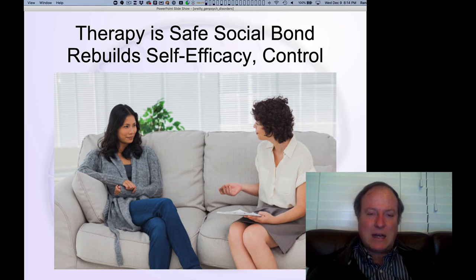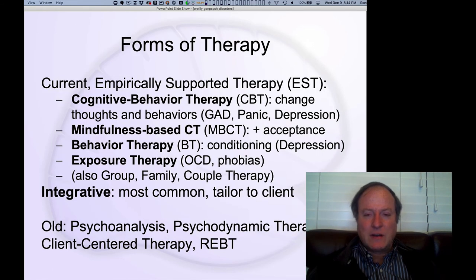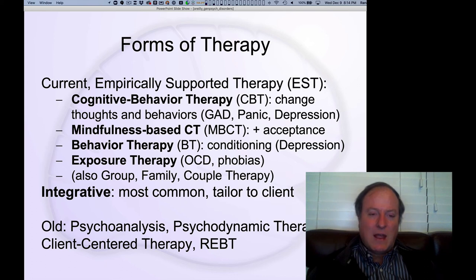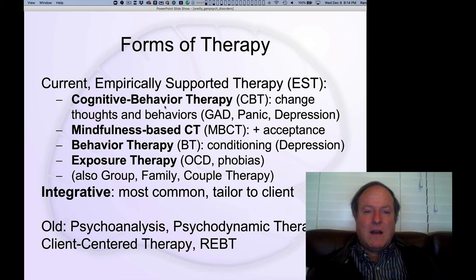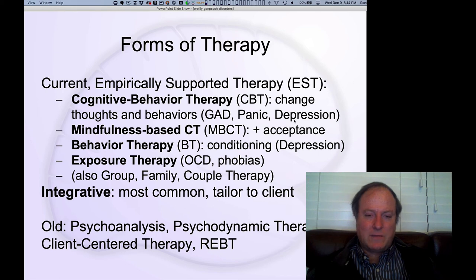Therapeutic allegiance and therapeutic alliances are terms used to describe the unique aspect of this relationship. There are several specific forms of therapy, and there's the notion of empirically supported therapy — therapy that through randomized controlled studies has demonstrated time and again that it is effective. Cognitive behavioral therapy is really the most widely adopted therapy; it involves ways of changing both thought and behavior and is widely used for treating generalized anxiety disorder, panic, and depression.